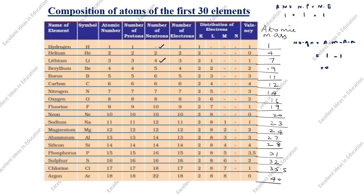Beryllium: atomic mass 9 minus 4 gives 5 neutrons. Boron: 11 minus 5 gives 6. Carbon: atomic mass 12 minus atomic number 6, so it comes to 6. Nitrogen: atomic mass 14, atomic number 7, it comes to 7.